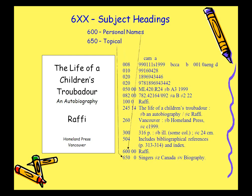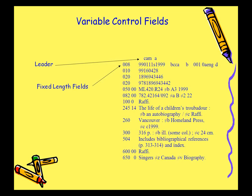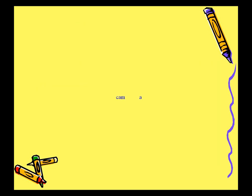The 6XX fields contain the subject headings. The 600 field is a personal name subject heading, and the 650 is a topical subject heading. The second indicator — the 0 after the tag — indicates the controlled vocabulary used: 0 for Library of Congress headings and 1 for the annotated card headings, more commonly known as the LC children's headings. In the MARC record, we also code certain data in the leader and the 008 fixed length fields so that a computer can find things more quickly.